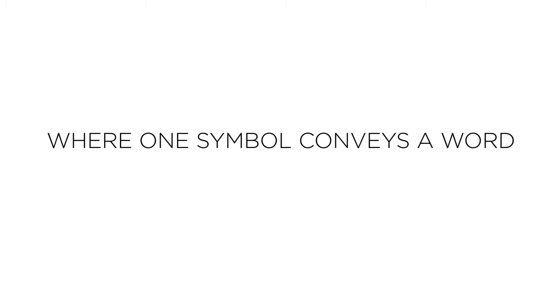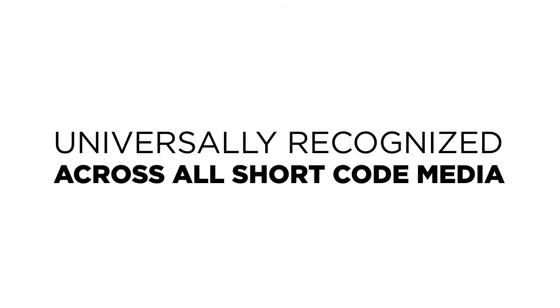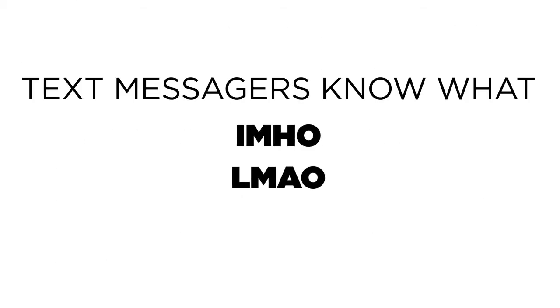Where one symbol conveys a word, use it. The ampersand, the letters UR for the words 'you are,' and the letter W for the word 'with' are universally recognized across all shortcode media. Text messengers know what IMHO and LMAO mean — Tweeters will, too.